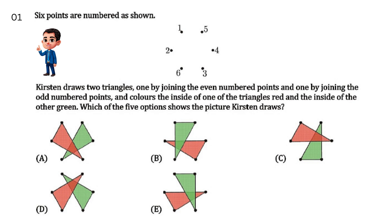Six points are given. Kristen has two triangles. One triangle is even numbers and one triangle is odd numbers. One triangle is red and the other is green.